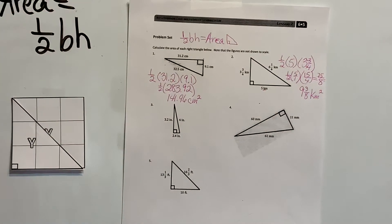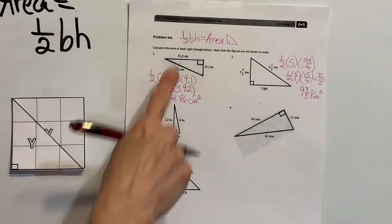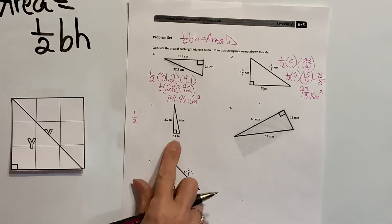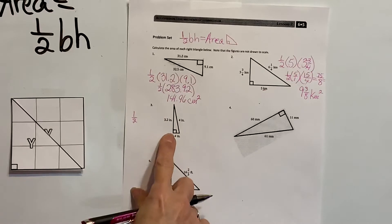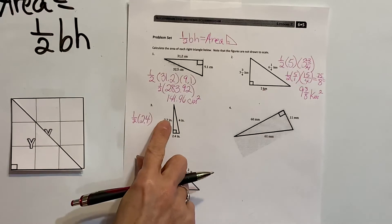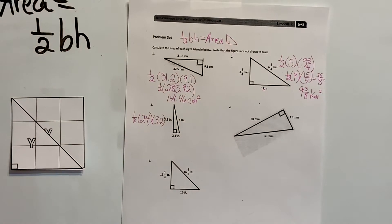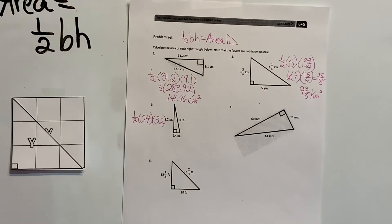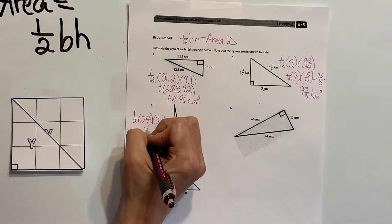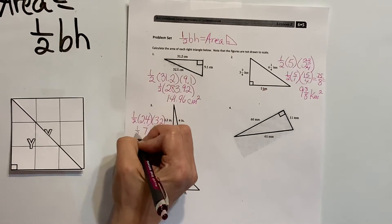For number three, we again have half base times height. Here's my perpendicular line, so I know this is my base: 2.4. The height is 3.2. When I multiply 2.4 times 3.2, I get 7.68, and I need half of that.